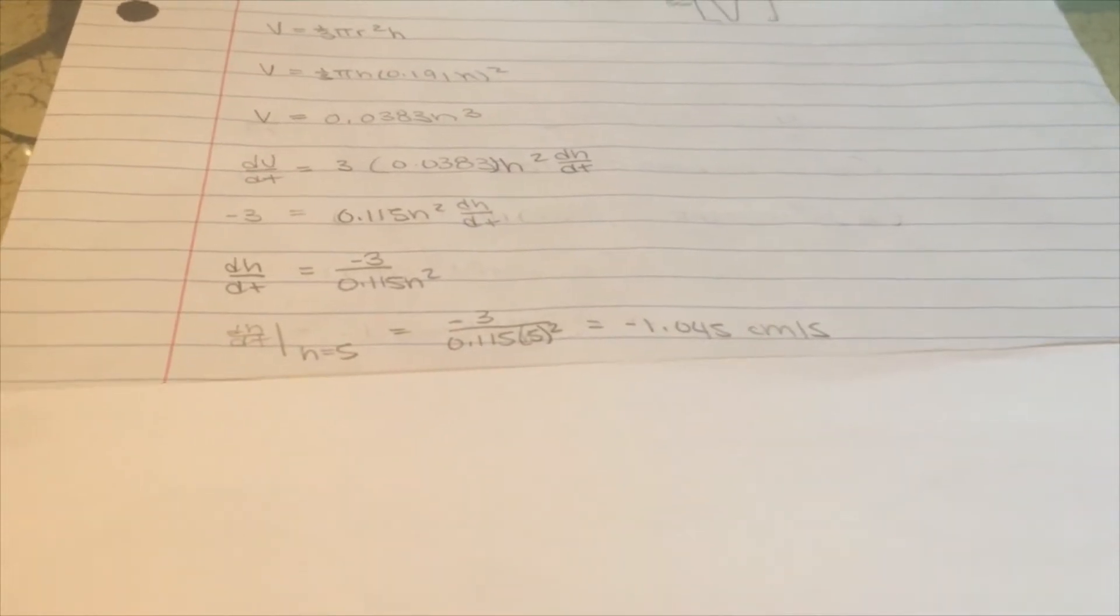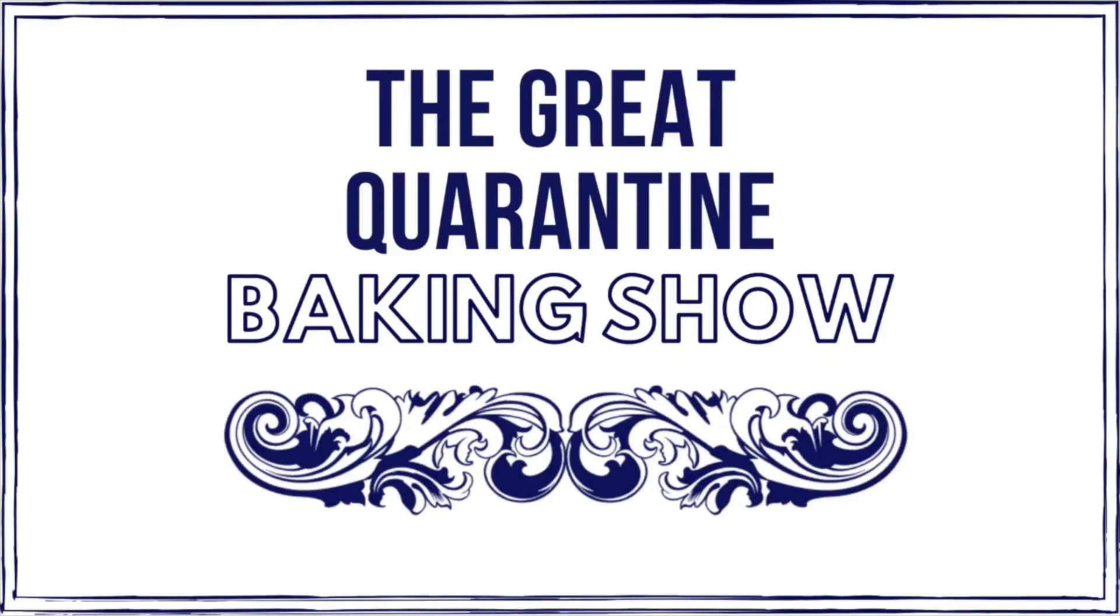Finally, we can rearrange the equation to solve for the change in height when the height is 5 cm. We find that when the height of the sugar in the funnel is 5 cm, the height is decreasing at a rate of negative 1.045 cm per second. Now, back to the baking show.